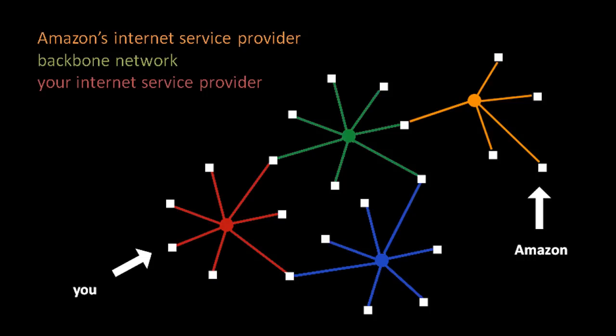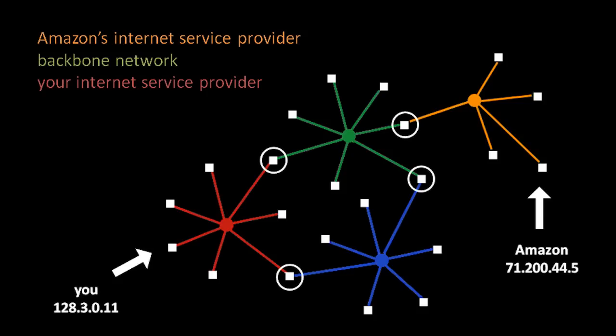First, of course, both of you must be connected to the internet. What that means is that you pay a local internet service provider to allow you to connect your computer to their local network — a network which probably spans just your citywide area. Amazon, in turn, must do the same thing and connect to an internet service provider in their area. When you connect to your internet service provider, your system becomes a part of that network. For a packet to reach from your computer to Amazon's computer, it has to get copied from router to router until it ends up on Amazon's computer.